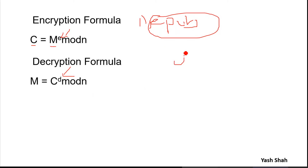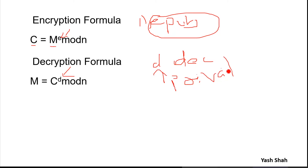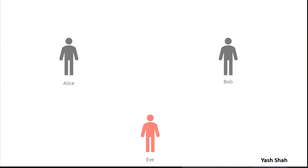After getting n, E, and D, we encrypt our message. Suppose the message is M. The cipher becomes M raised to the power E mod n — so we encrypt using the public key. We decrypt using the private key. n and E are public, while D is private.